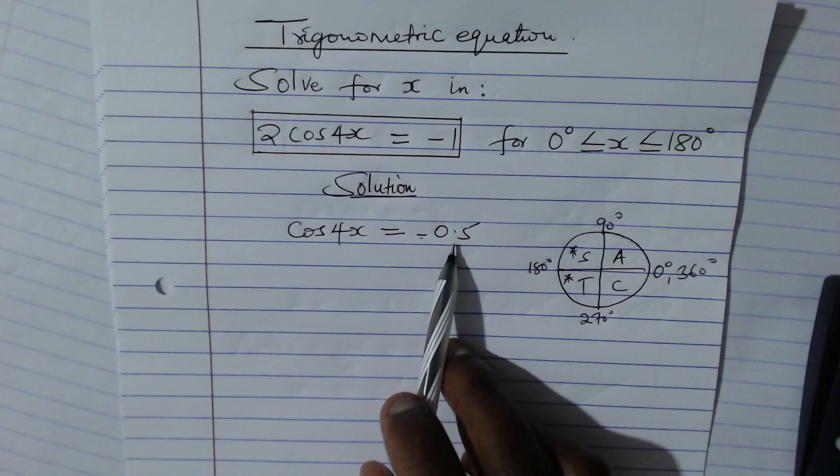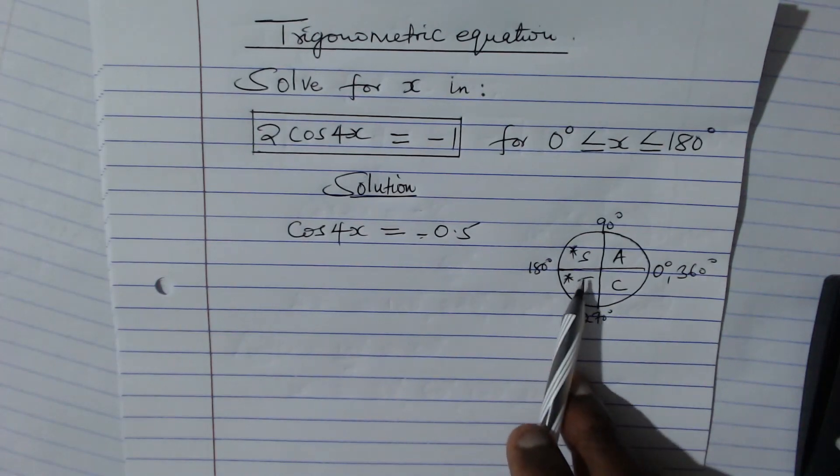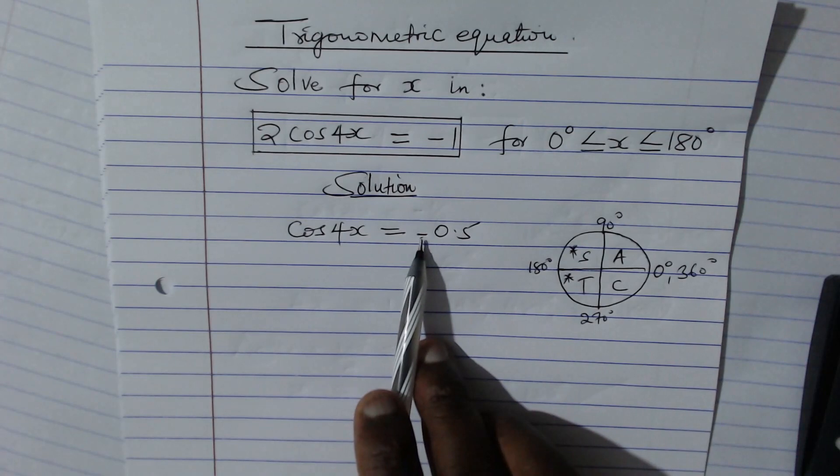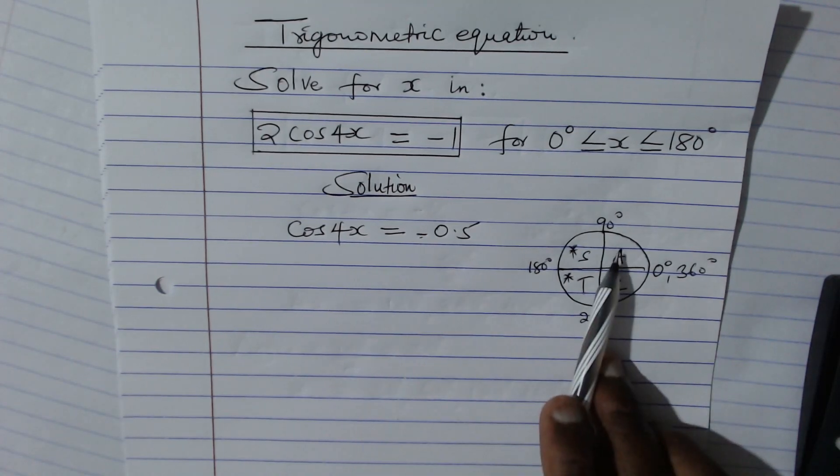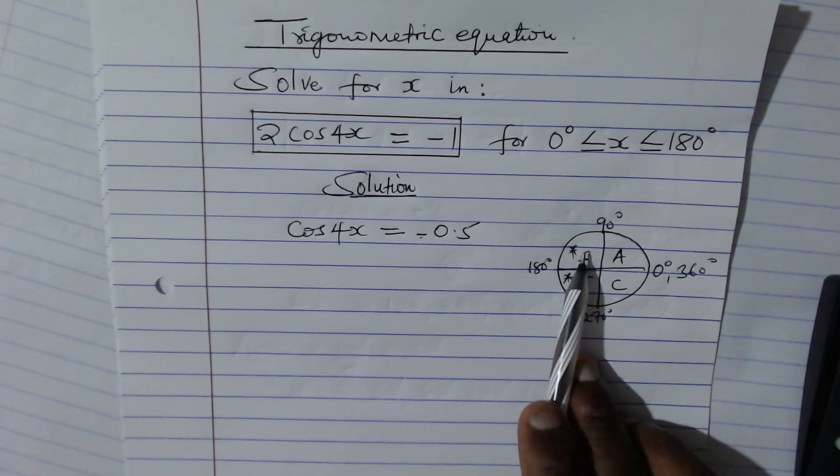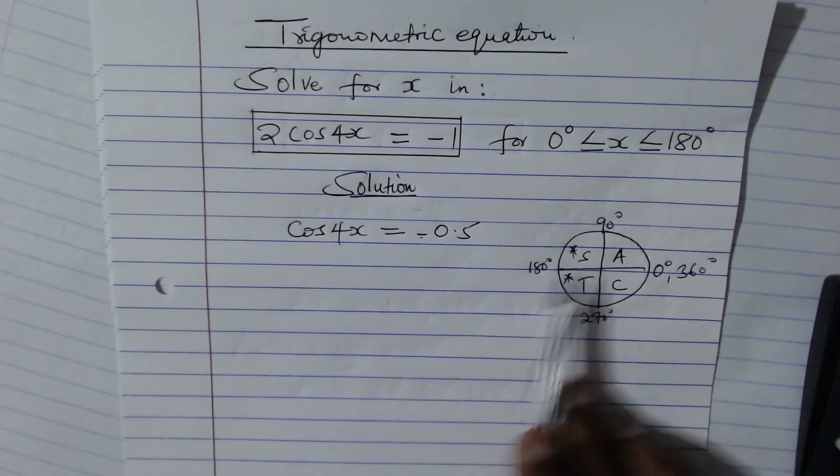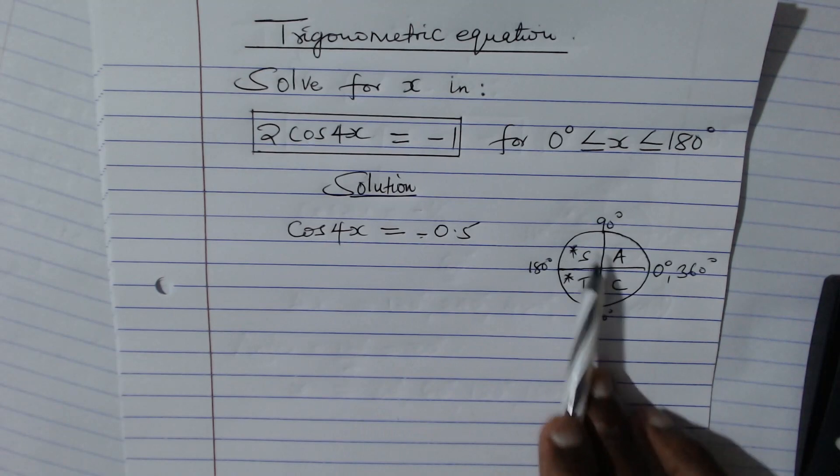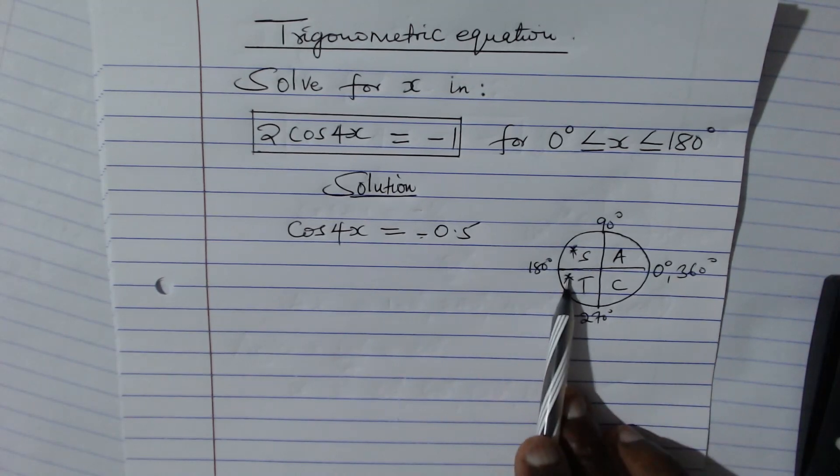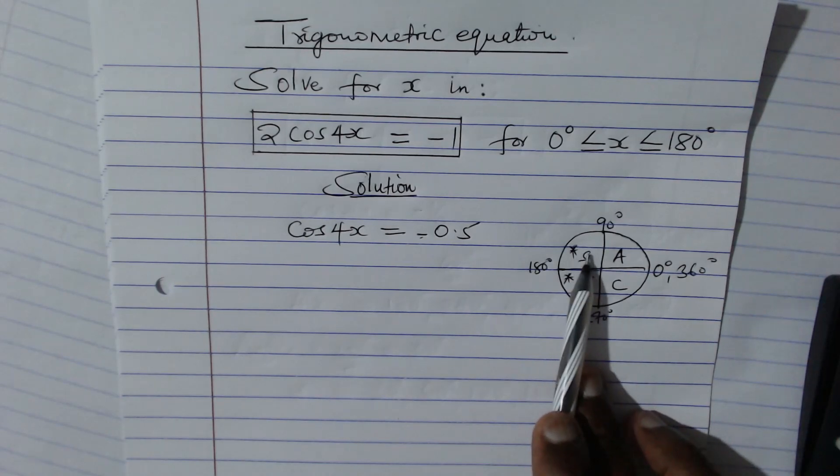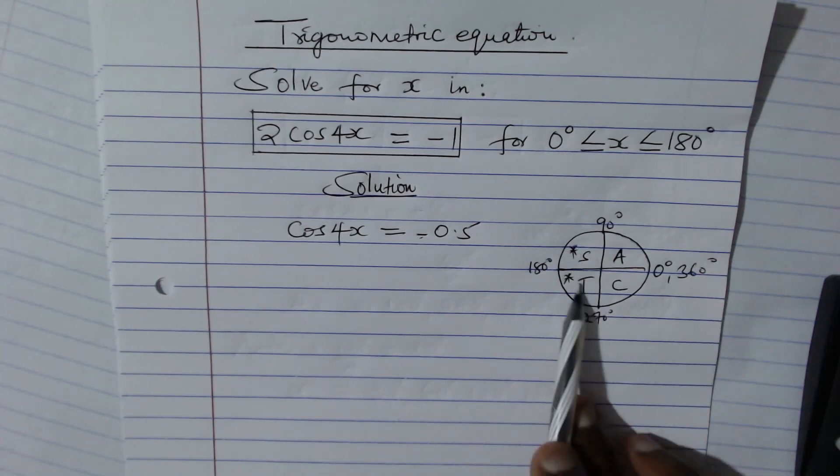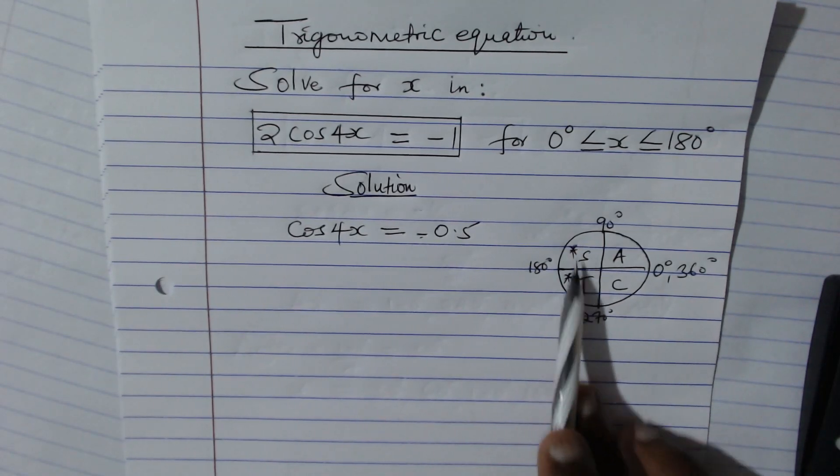Otherwise, when you're getting the acute angle that you're going to use to find these angles, we shall not use this negative. The negative is there to help us locate the quadrant in which these angles will lie. And this one means where do we find cosine being negative in the unit circle? It is in the second and in the third quadrant, since here all of them are positive. The second is where you have only sine which is positive, so all the others are negative. Our angles will come from these two quadrants.